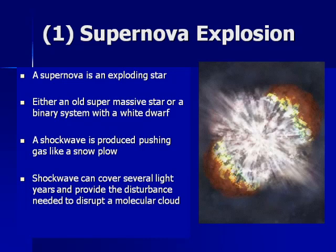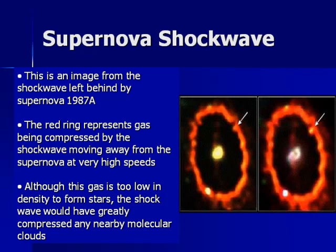With supernova explosions — a supernova being an exploding star, typically a very massive old star — when it explodes, the shock wave creates a huge increase in local pressure that can overcome both the thermal and magnetic pressure and cause the cloud to collapse. Here's one of the recent supernovae we've been able to study: Supernova 1987A, named after the year it was discovered. It took place in the Large Magellanic Cloud. You can see the shock wave from one year to a few years later slowly expanding and interacting with the matter around the star.